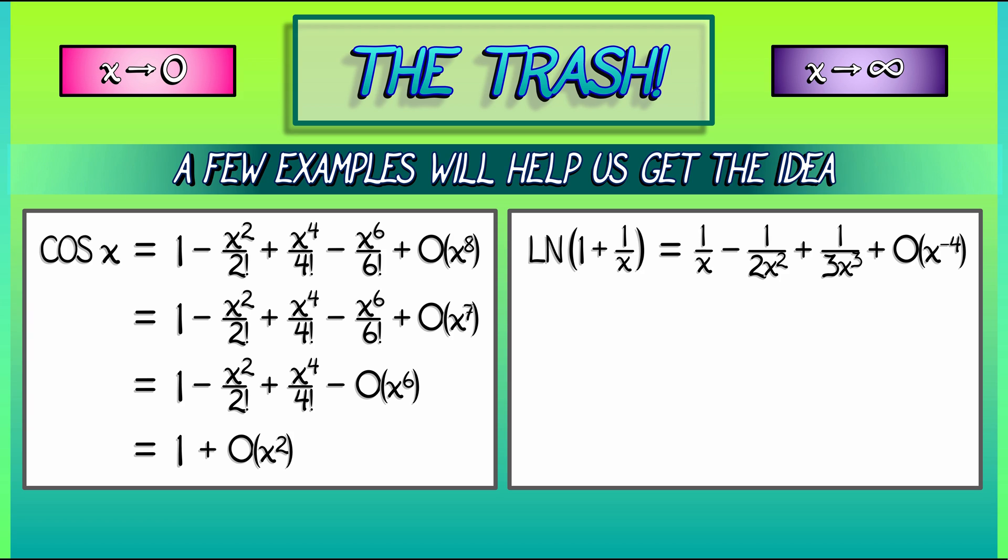Okay, what else could we do with this? Well, we can take those first three terms and then add a big O of x to the minus 3rd. That would be accurate, but redundant because we've already got a 1 over 3x cubed in there.